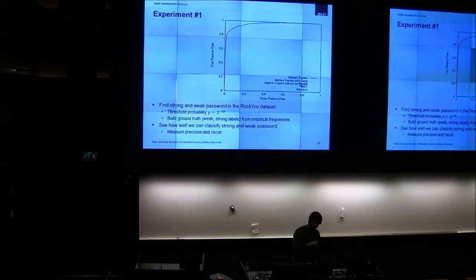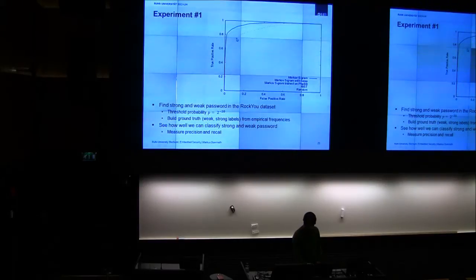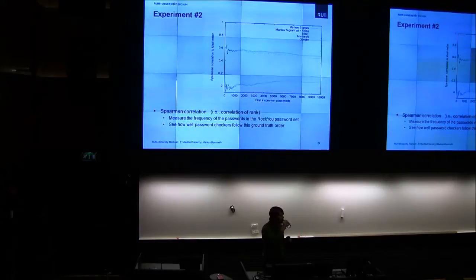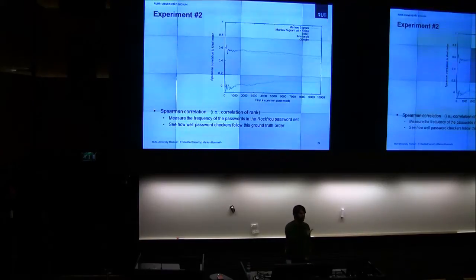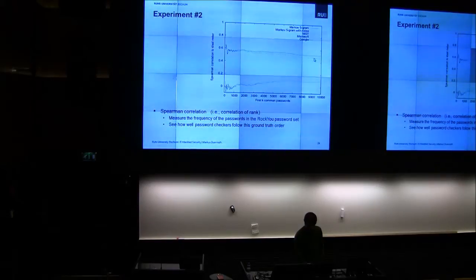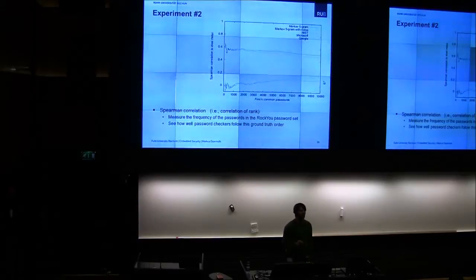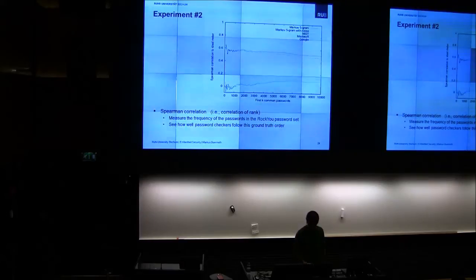To demonstrate site dependency: the curve trained on the phpBB dataset and tested against RockYou shows that using passwords from a different site substantially decreases performance. The Spearman rank correlation results show the top line is for pure 5-grams, next is with added noise. Microsoft, Google, and NIST estimations are hardly correlated with actual password strength — which is a key takeaway.